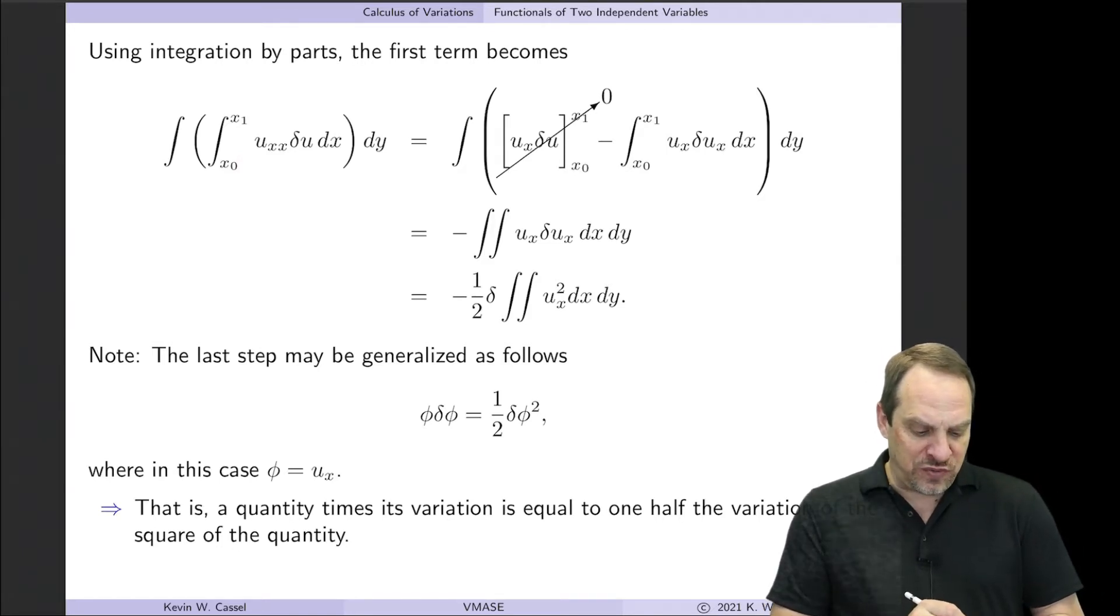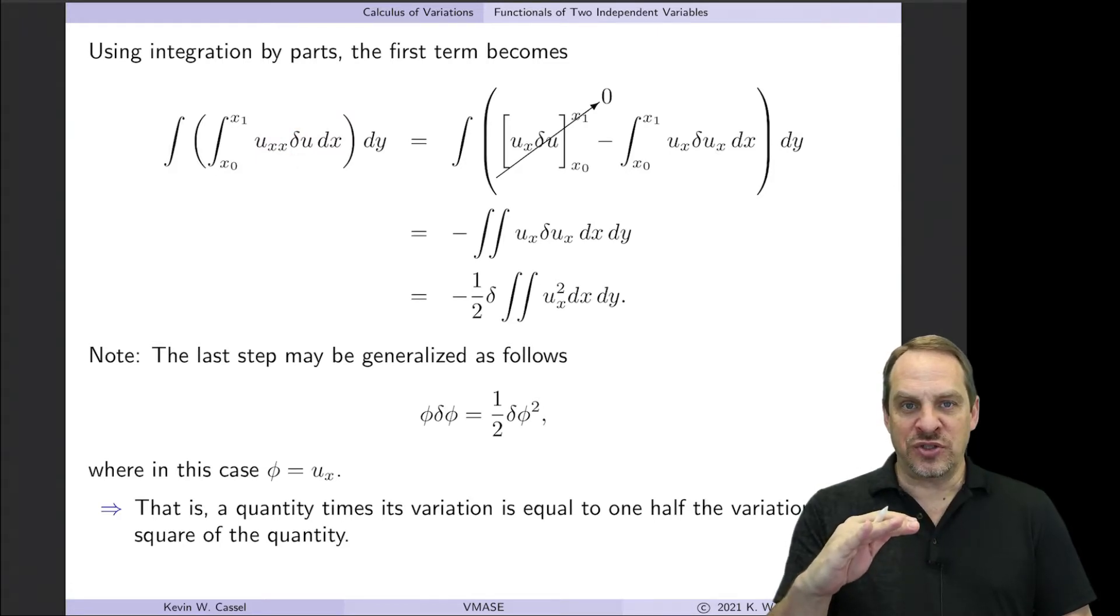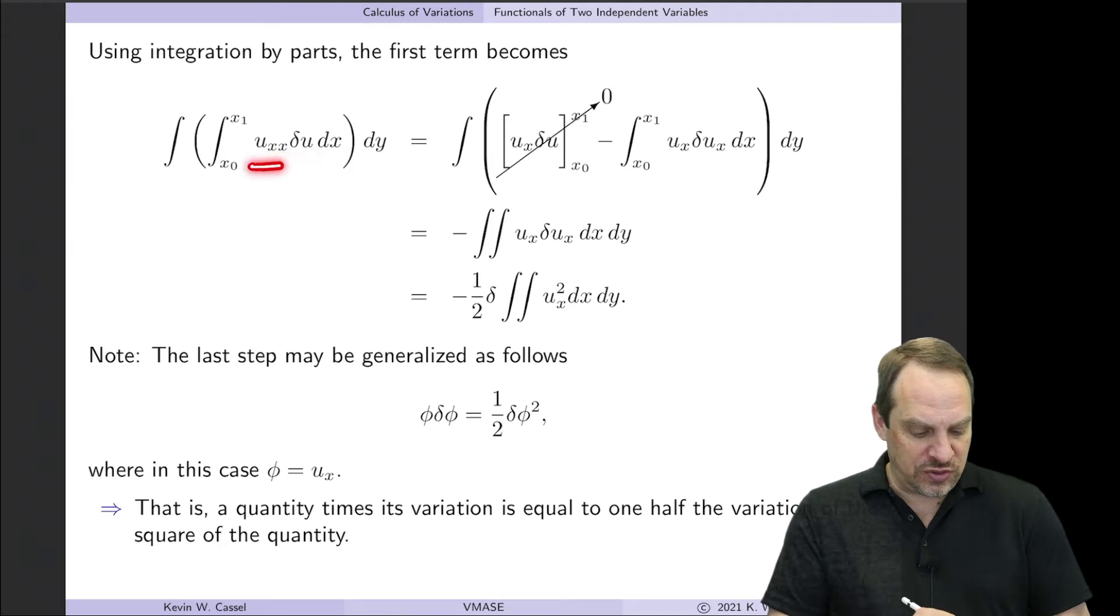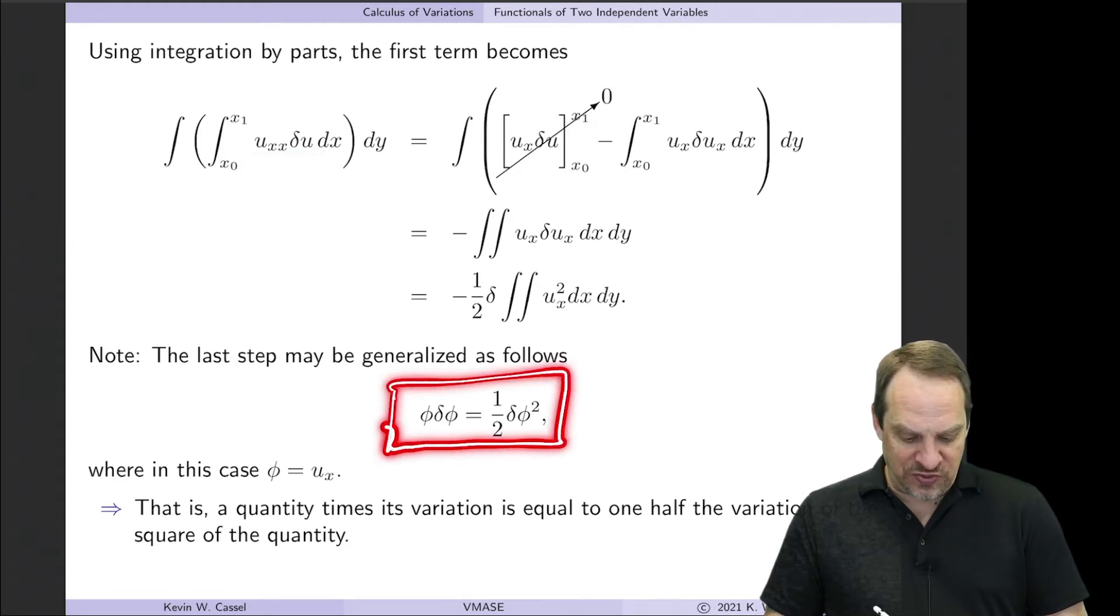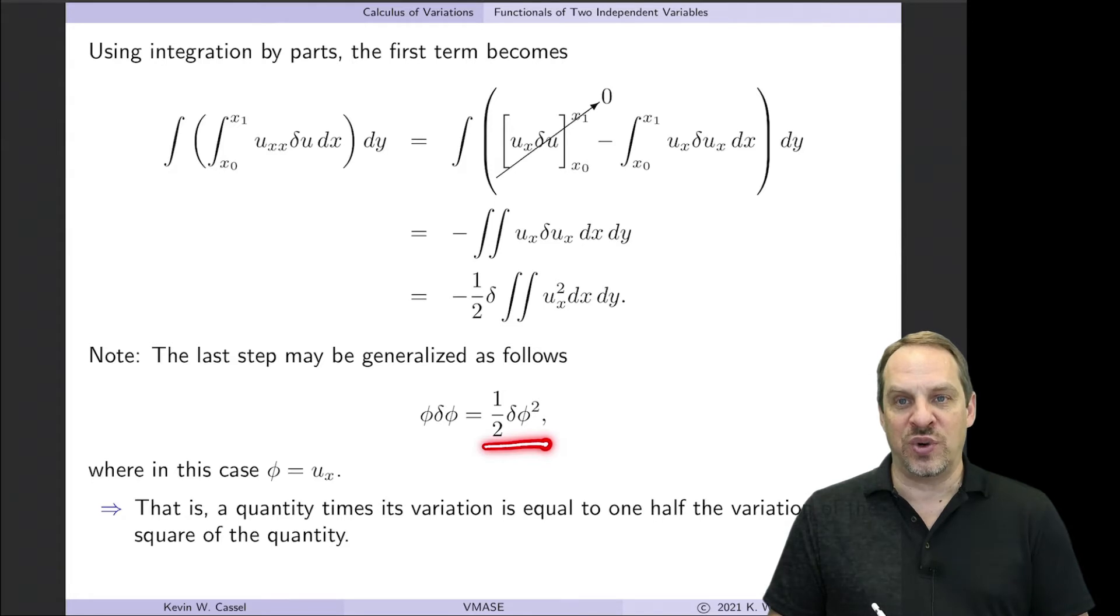So I want to now move derivatives off of the Uxx and onto the delta U. Just think of that derivation that we did for the Euler equation, but now backwards. So in that case, we wanted to get derivatives off of the delta U. Now we actually want to get derivatives back onto the delta U. So this Uxx delta U term, I want to look like Uₓ times delta Uₓ. Because if I do that, then I can take advantage of the fact that something times the variation of that same something is just 1/2 times the variation of the something squared. This is exactly the reverse of what we have done so many times in the previous cases.